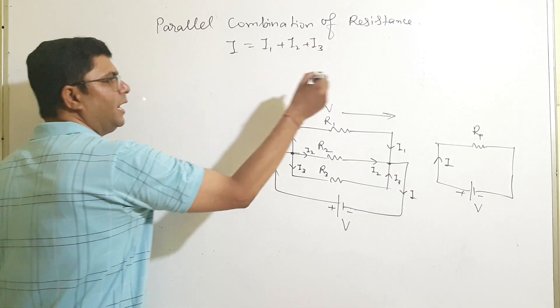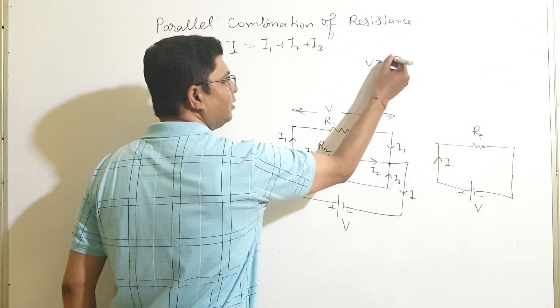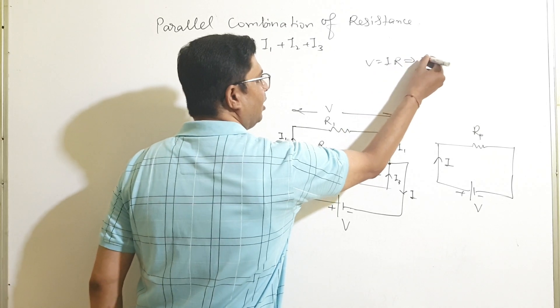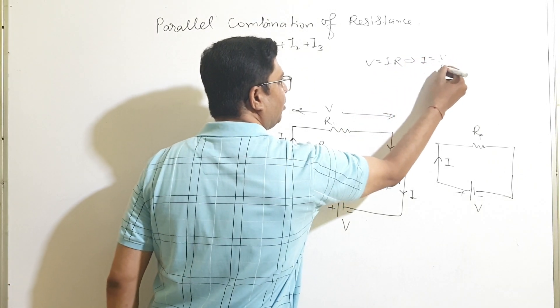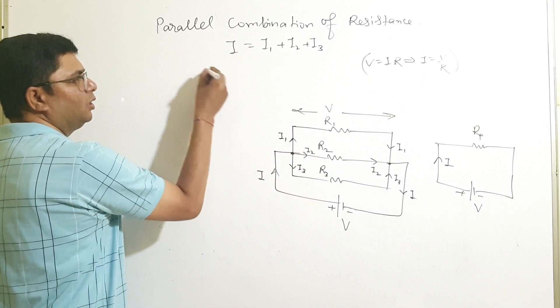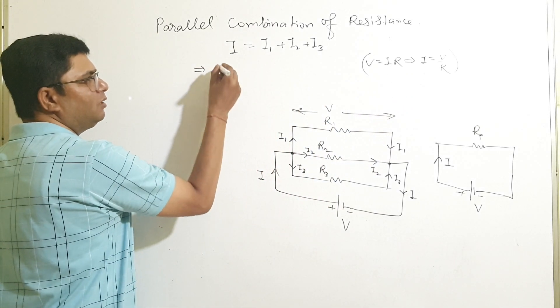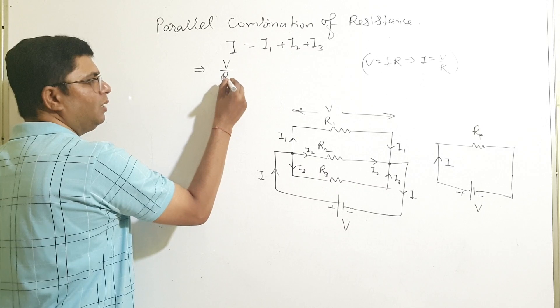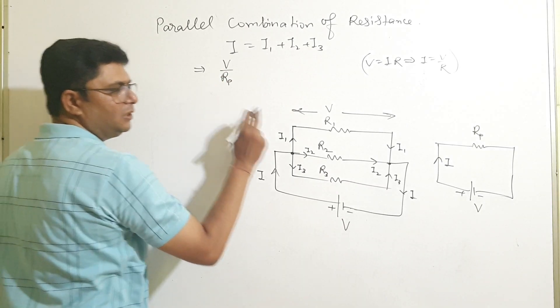We know that, Ohm's law, V is equal to IR. So you have I equals to V upon R. Use this information at this place. So at this place, I equals to V upon Rp. From this equivalent circuit.